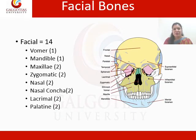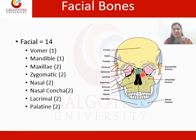Then the facial bones: vomer, mandible (the lower jaw), maxilla (the upper jaw), zygomatic (the cheek bone), nasal, the nasal conchae, lacrimal, and the palatine in the mouth.